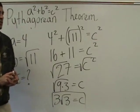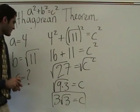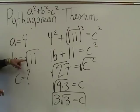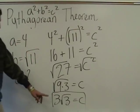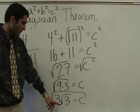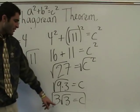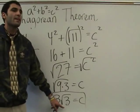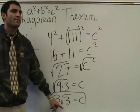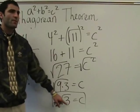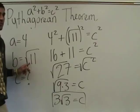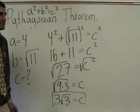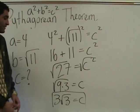Doesn't C always have to be the longest one? It is. 4 is one side, and the square root of 11 is about 3-point-something. And 3 times the square root of 3 is like 1.7, so 3 times 1.7 will be more than 3-point-something. It will be the longest side.